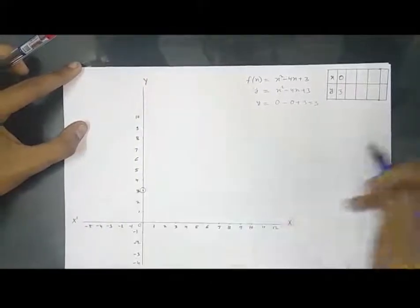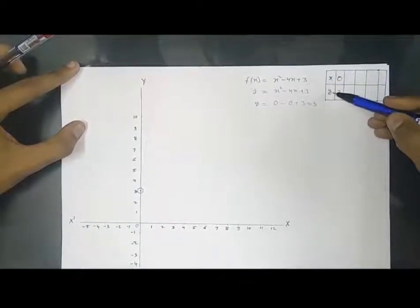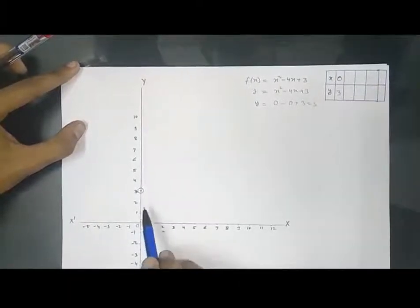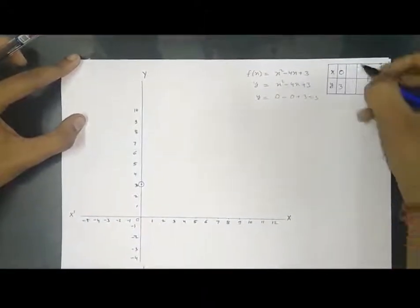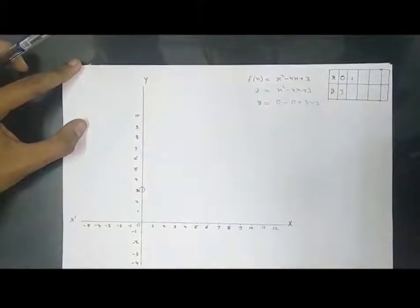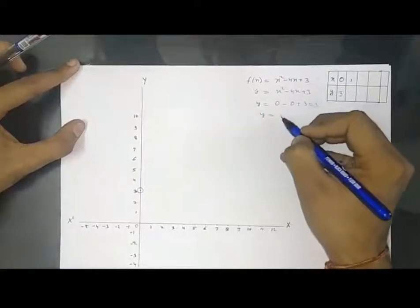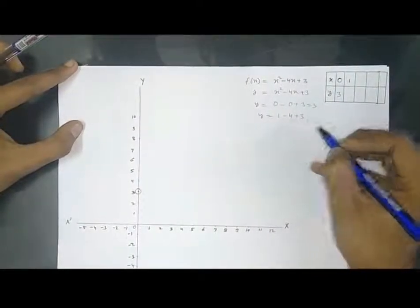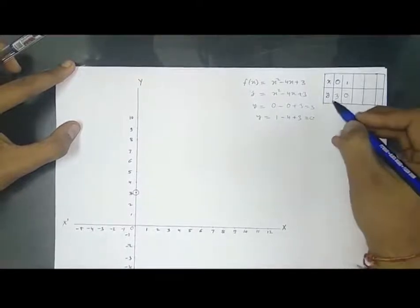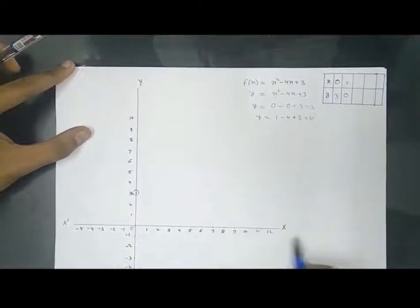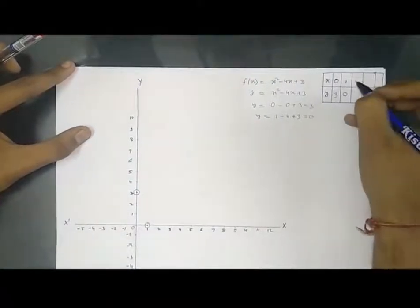Each (x, y) pair represents a point on the plane. Next, for x = 1: y = 1² - 4(1) + 3 = 1 - 4 + 3 = 0. So y = 0, which means the point (1, 0) lies on the x-axis.